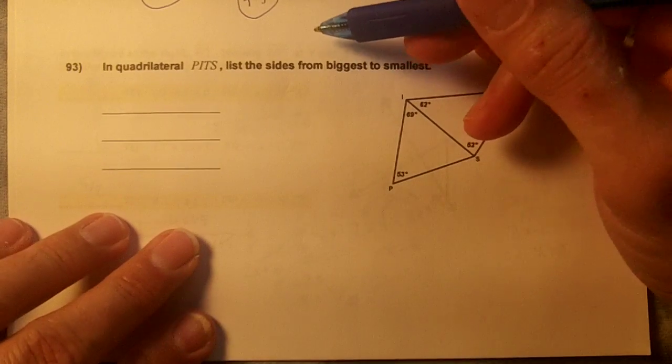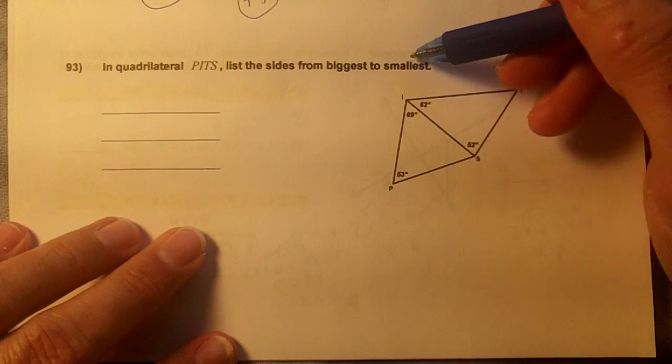And the last one. In quadrilateral PITS, list the sides from biggest to smallest.